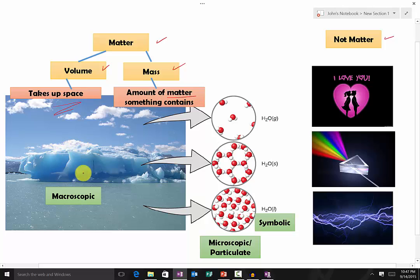If we look at this object right here, we have a few examples of matter. The first one is the glacier right here. It takes up a lot of space, so therefore it has a lot of volume, and we can see that it has a lot of mass as well.